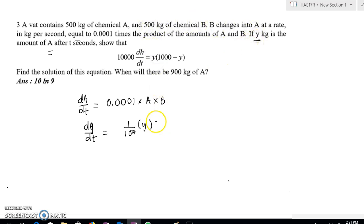How to express B in terms of A? Well, originally we have 500 kg of A and we have 500 kg of B. For B to convert to A, whatever is converted is Y.